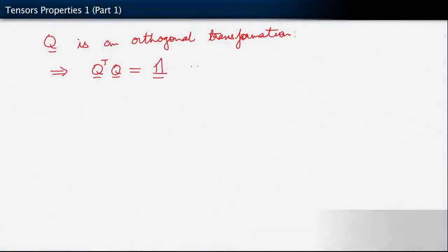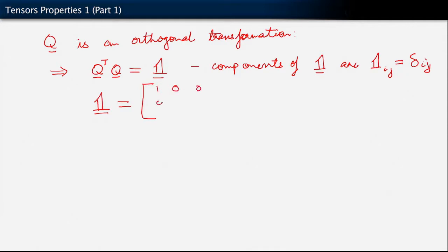Where this tensor that I've introduced, this bold faced one, is just your well-known identity matrix. Let me say that the components of this new tensor one are one_ij equals delta_ij. So you know exactly what this means. If you want to go to matrix notation, you would write one as your well-known identity tensor, your well-known three by three identity matrix.